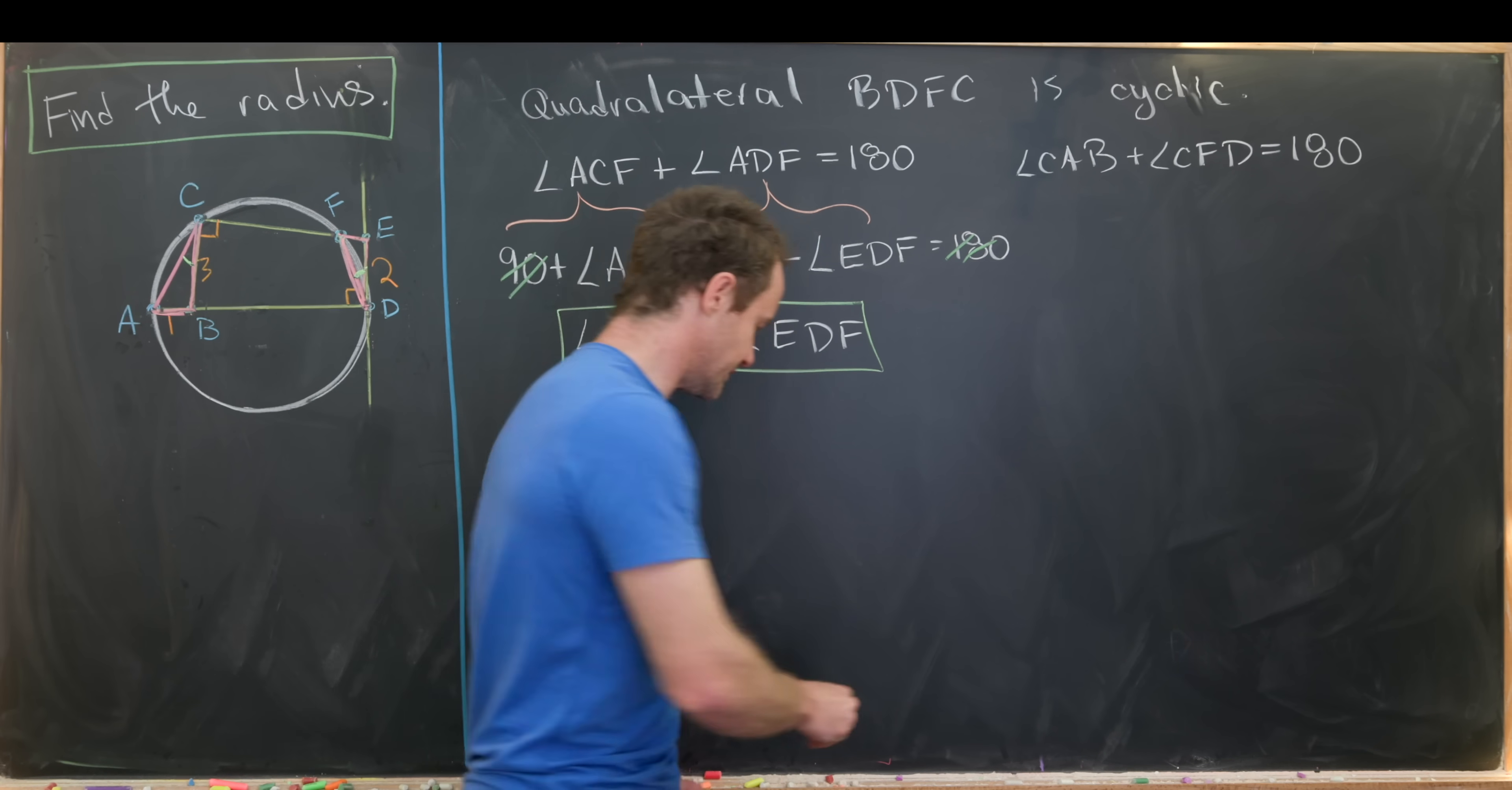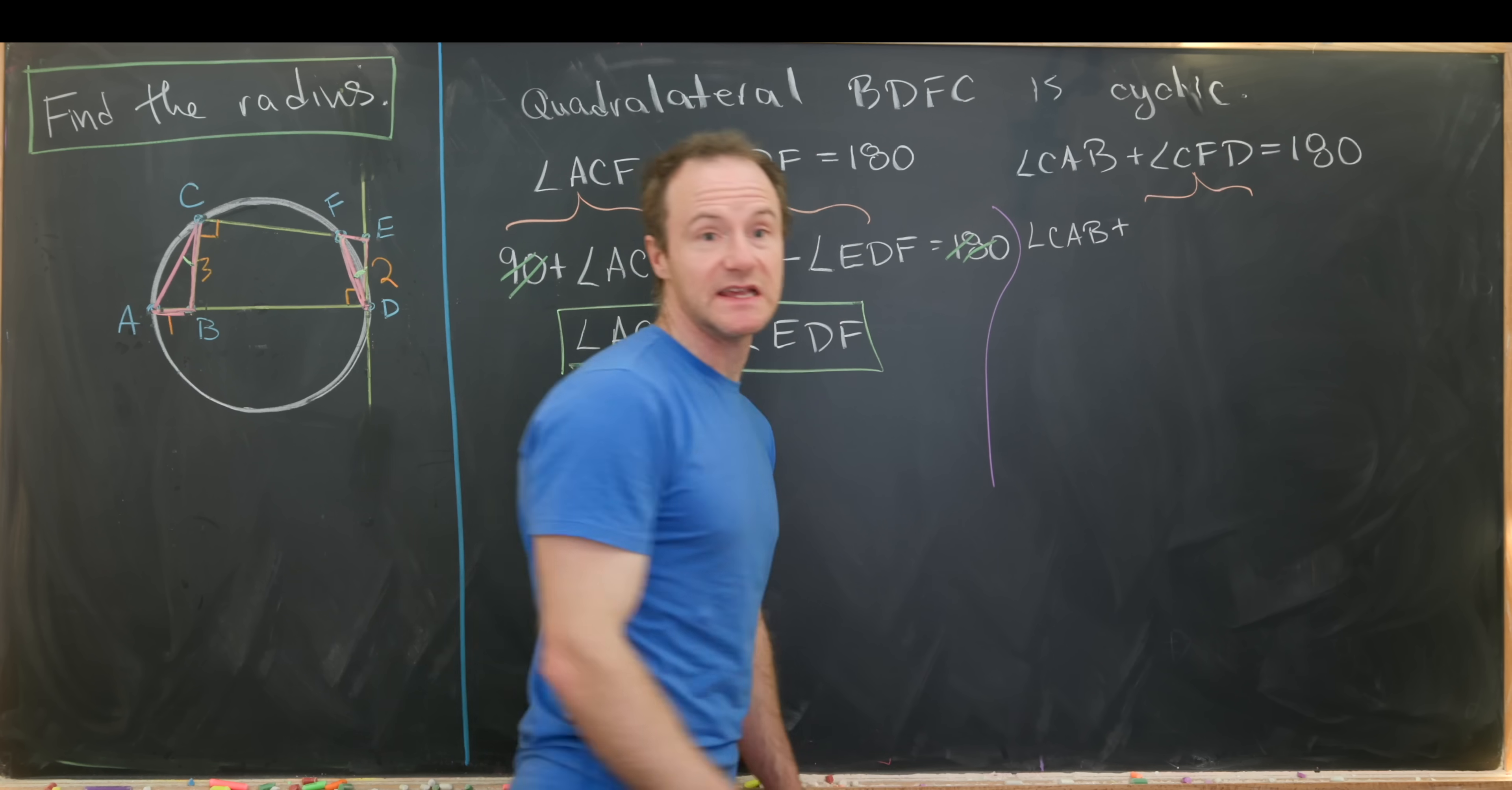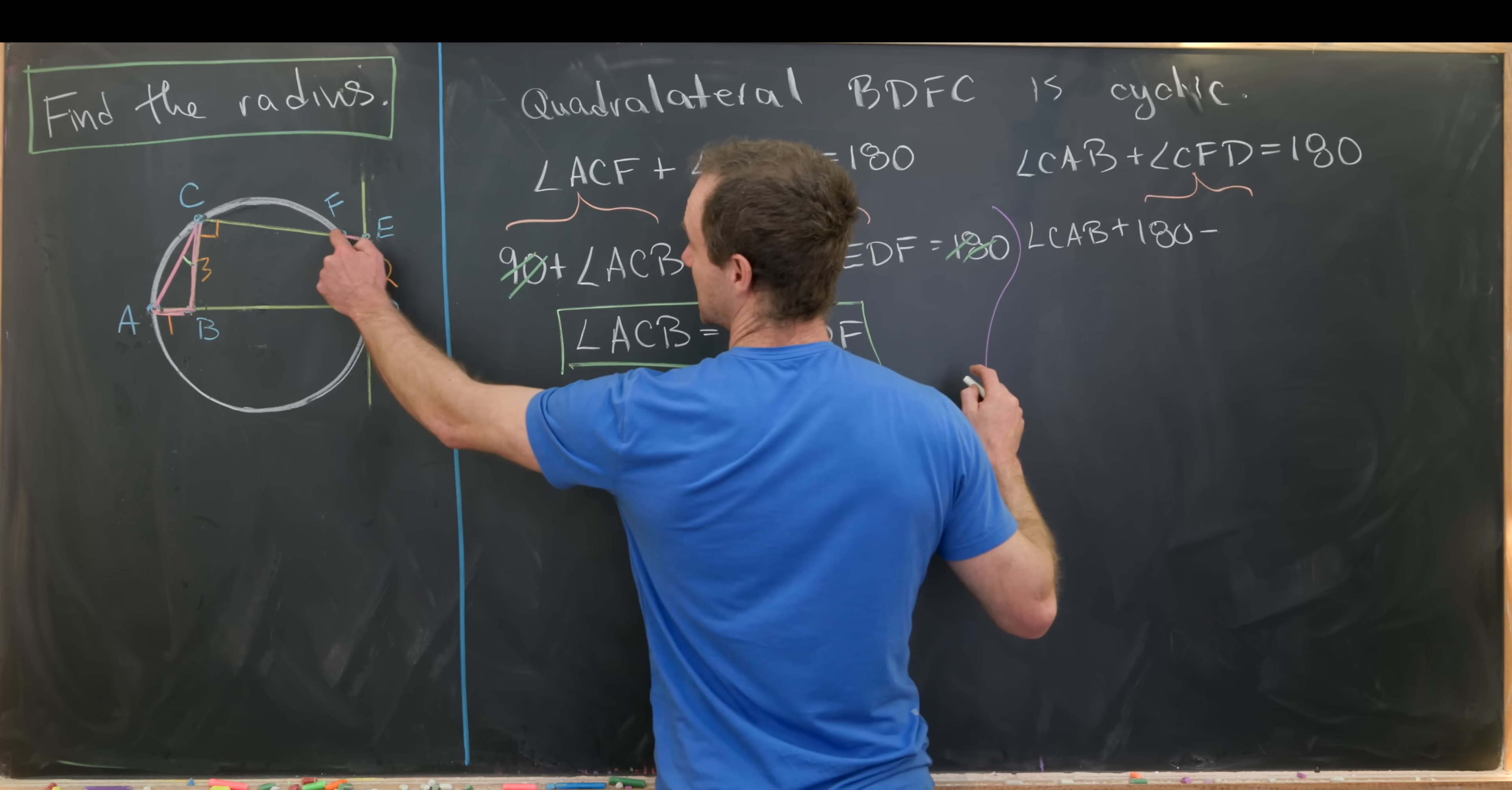So now let's do a similar type of calculation over here with CAB and CDF. So here we'll just bring angle measure CAB down. And then we will expand angle CFD as follows. So let's notice that CFD is 180 minus EFD because CE is a straight line. So we've got 180 minus angle measure EFD equals 180.